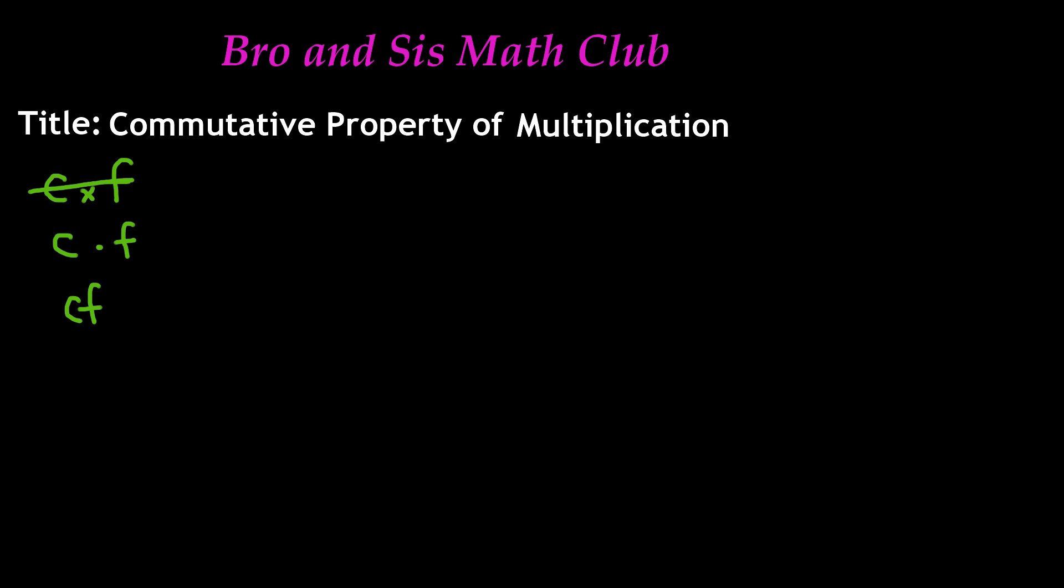So now the commutative property, once again, it says that it doesn't matter which order we write it in. So I can write CF, or I can also write FC. It doesn't matter because either way I'm still multiplying C by F, or I'm multiplying F by C.